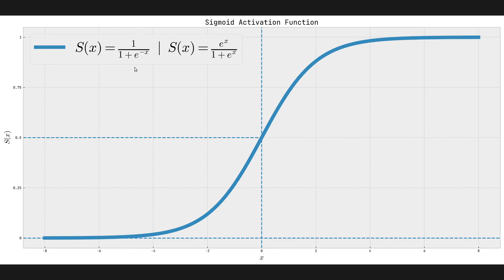This is the formula for sigmoid: 1 over 1 plus e to the power of minus x. The representation on the right is an equivalent formula - it's equivalent because if we multiply both the numerator and the denominator by e to the power of x, we get that representation.